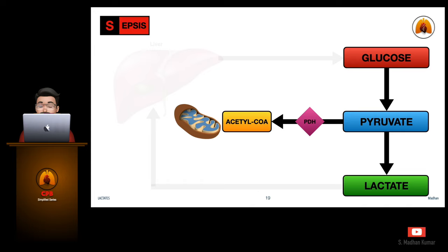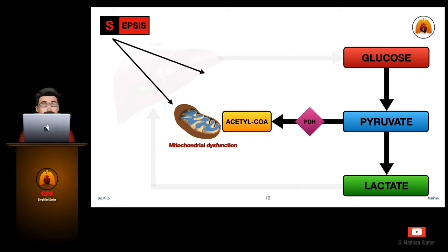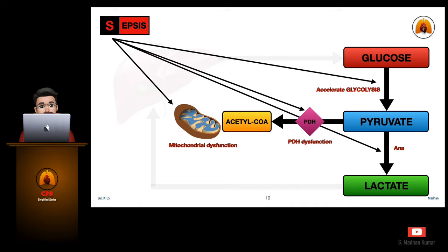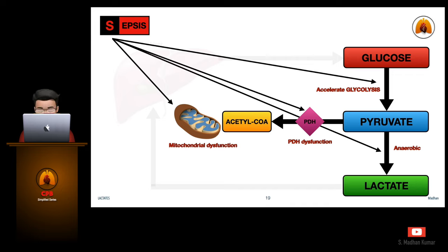Sepsis can elevate lactate through a number of mechanisms. It can cause mitochondrial dysfunction and pyruvate dehydrogenase dysfunction. Through fever and a hypermetabolic state, sepsis can accelerate glycolysis, producing excess pyruvate. Through hypotension and shock, or changes in microvascular perfusion, ischemic tissues produce elevated lactates. The mechanism of rising lactate in sepsis is multifactorial and not solely due to organ hypoperfusion.